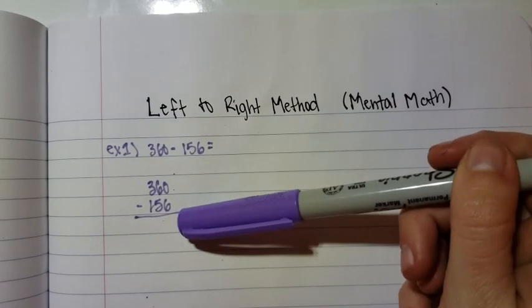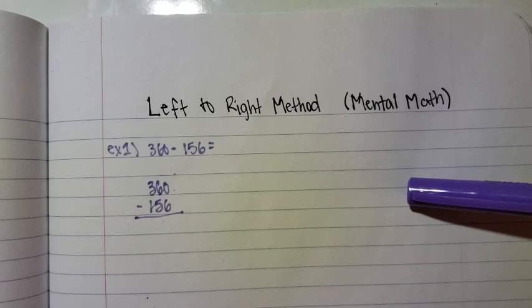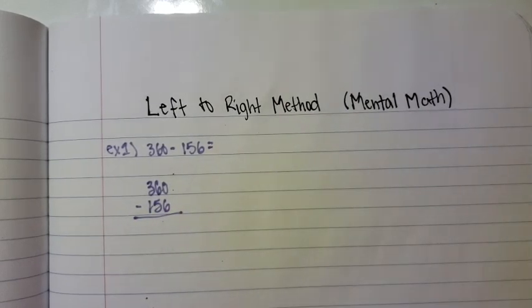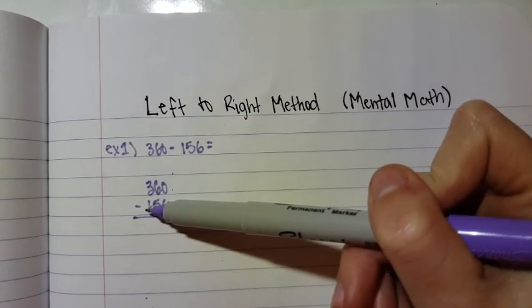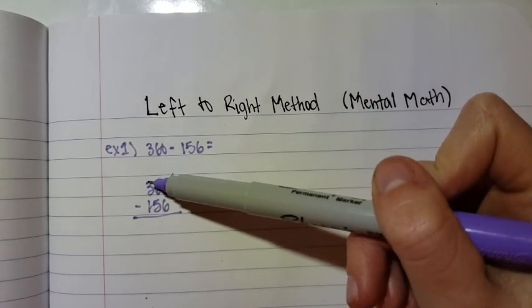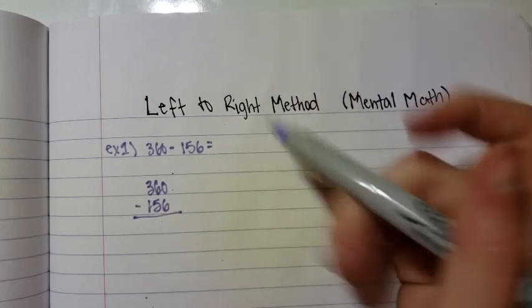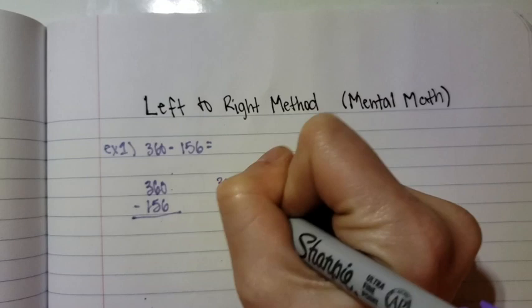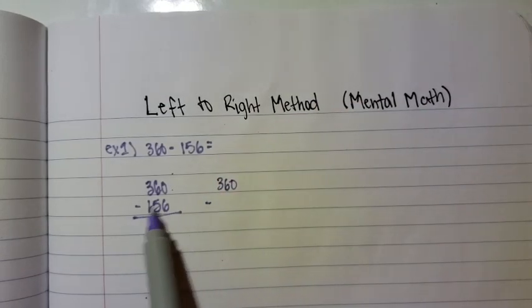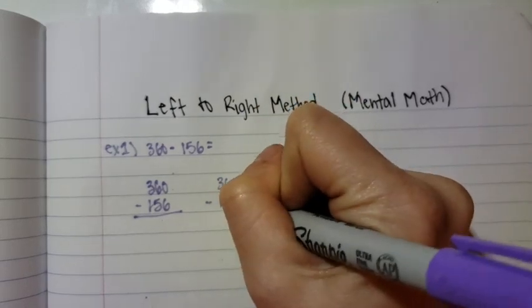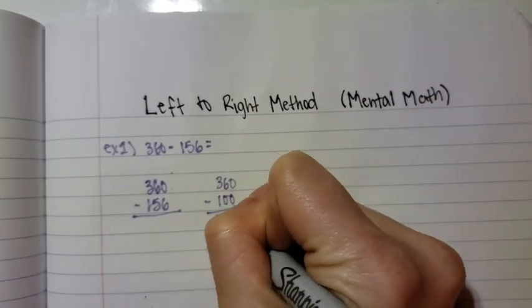You're going to write it in standard notation, but then you're also going to do a lot of side work to get you to the answer. You start from the far left of your problem on the bottom number. You're going to take your 360 and then subtract from the far left. So 156, the far left is the hundreds place. You're going to subtract 100 from 360, giving you 260.